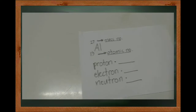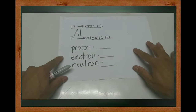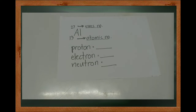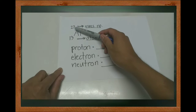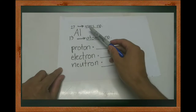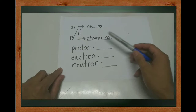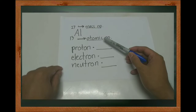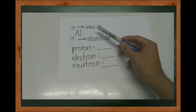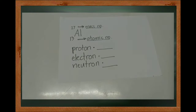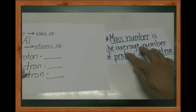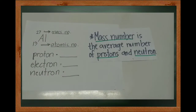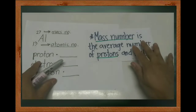Let's have an example: aluminum. As you can see, there are two numbers — 27 in the upper part, that is the mass number, and 13 in the lower part, that is the atomic number. Mass number is the average number of protons and neutrons.